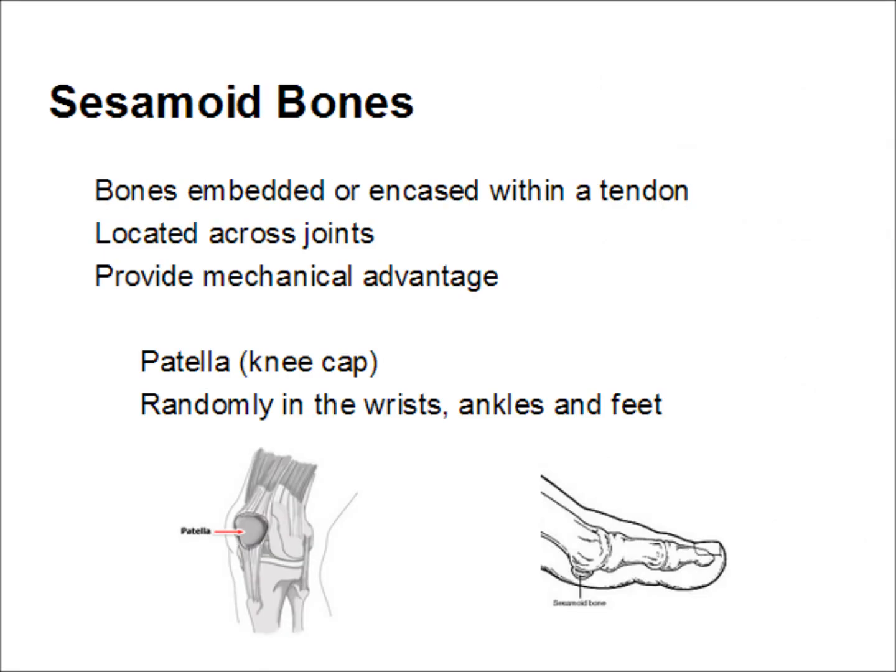Finally, we have sesamoid bones. Sesamoids are bones embedded within a tendon. They are located across joints and provide mechanical advantage. The patella, or kneecap, is a sesamoid. Additionally, most people have a variety of sesamoids in their wrists, ankles, and feet.